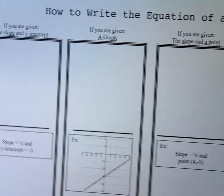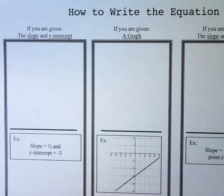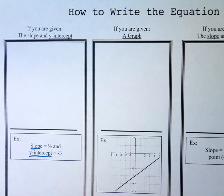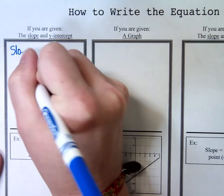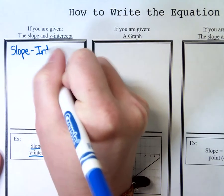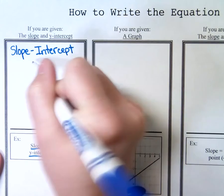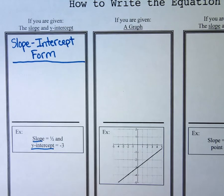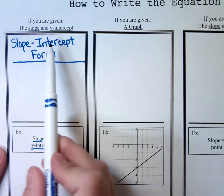So let's start with the first one — it's really all in the name. If you are given the slope and the y-intercept, you have to decide: do I use slope-intercept form, or do I use point-slope form? If I'm given the slope and the y-intercept, I'm going to start by using slope-intercept form. It's all in the name — if you're given the slope and the intercept, you start with slope-intercept form.